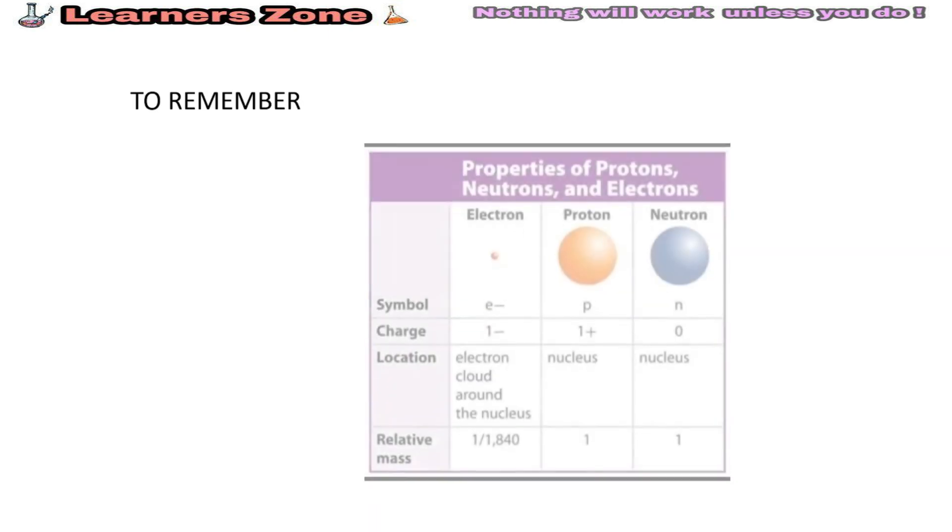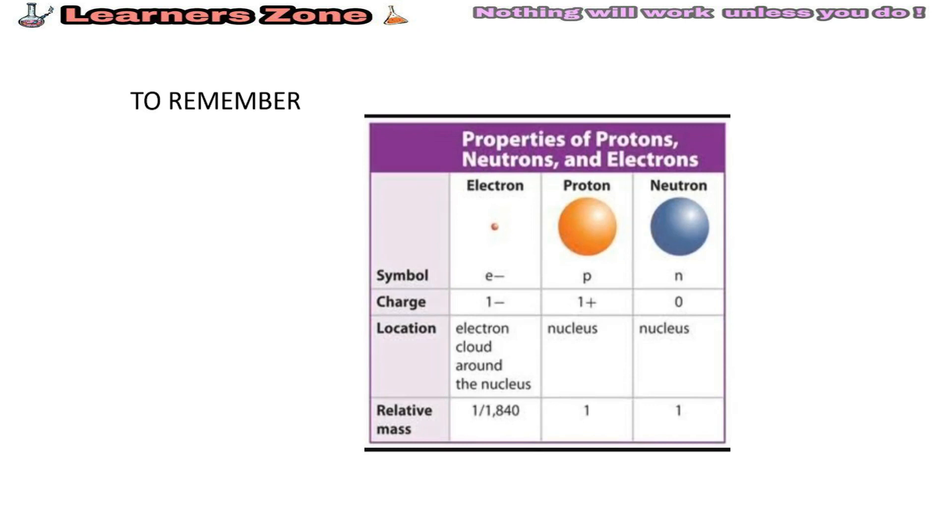The most important part to remember: what are the symbol, charge and location of electron, proton and neutron. Electrons are negatively charged, protons are positively charged, and neutrons are neutral. Symbols are E for electron, P for proton and N for neutron.